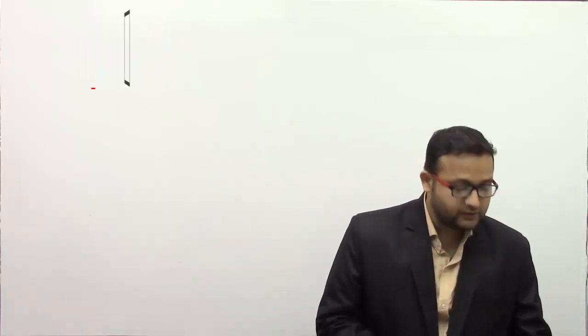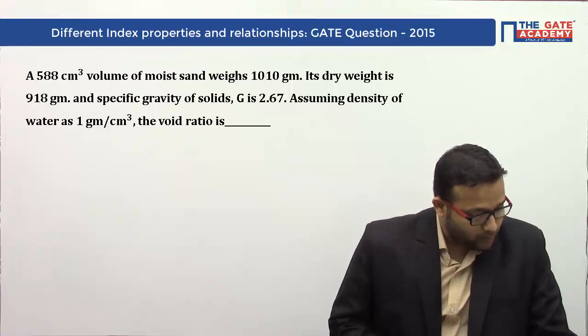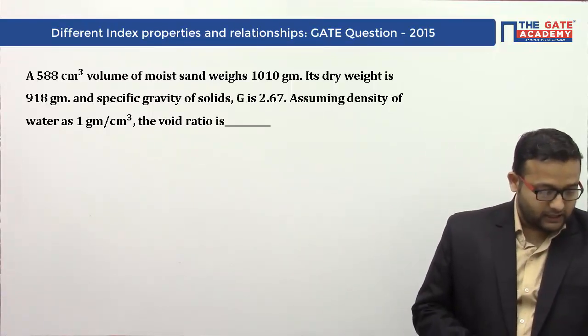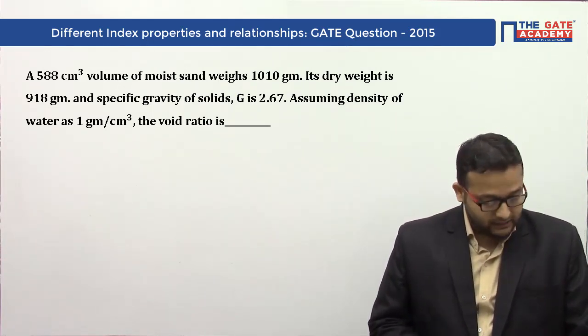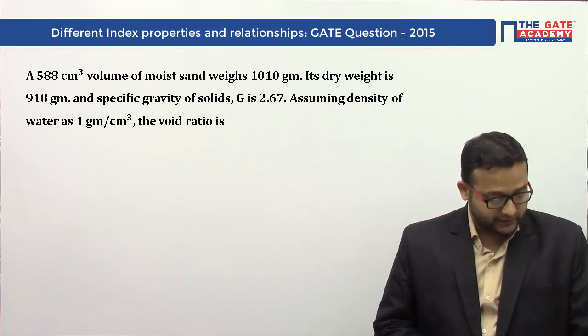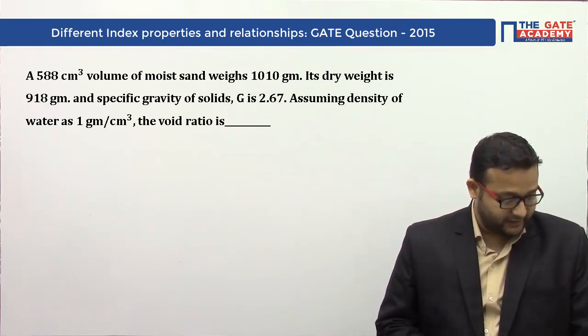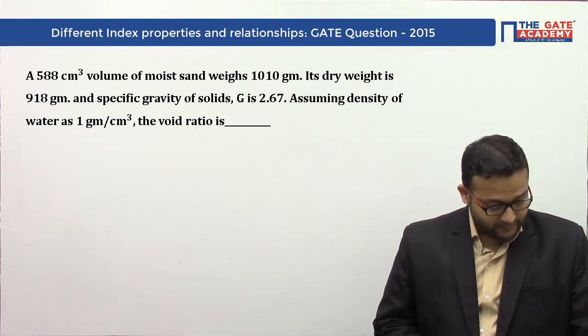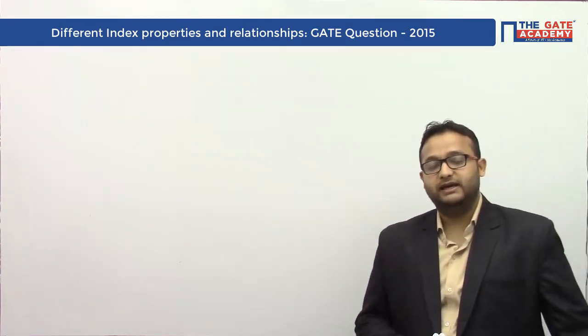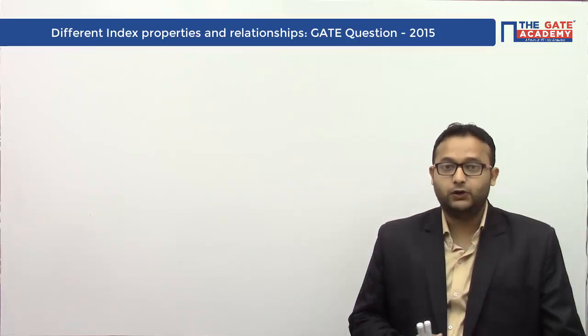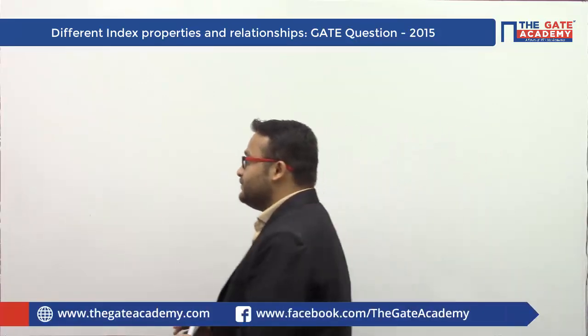Today we will solve one problem asked in GATE 2015 for two marks. The problem is from geotechnical engineering: a 588 centimeter cube volume of moist sand weighs 1010 grams, its dry weight is 918 grams, and the specific gravity of soil solids G is 2.67, assuming density of water as 1 gram per centimeter cube. Find the void ratio. This problem was asked in GATE 2015 set two for two marks.